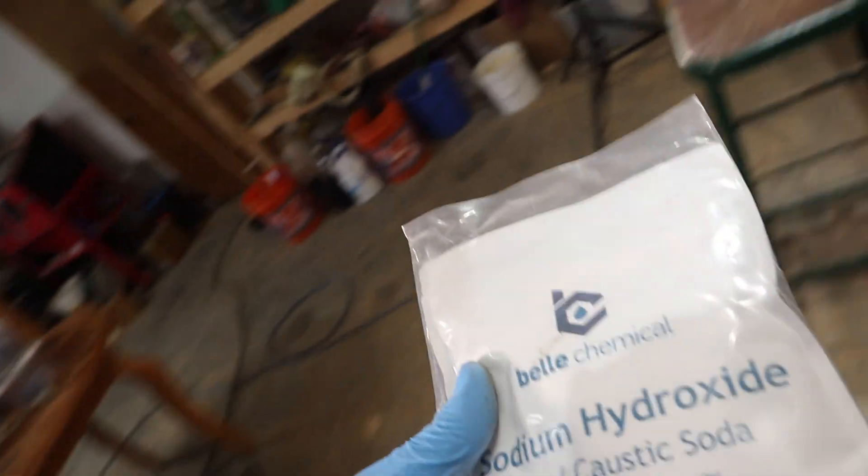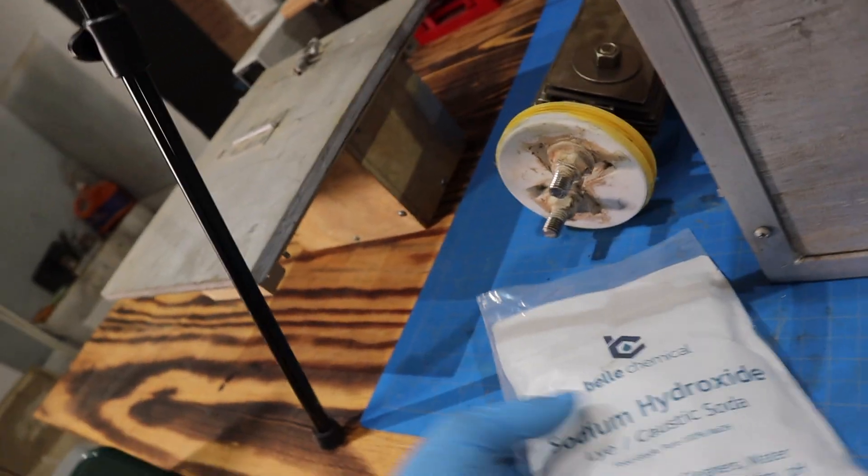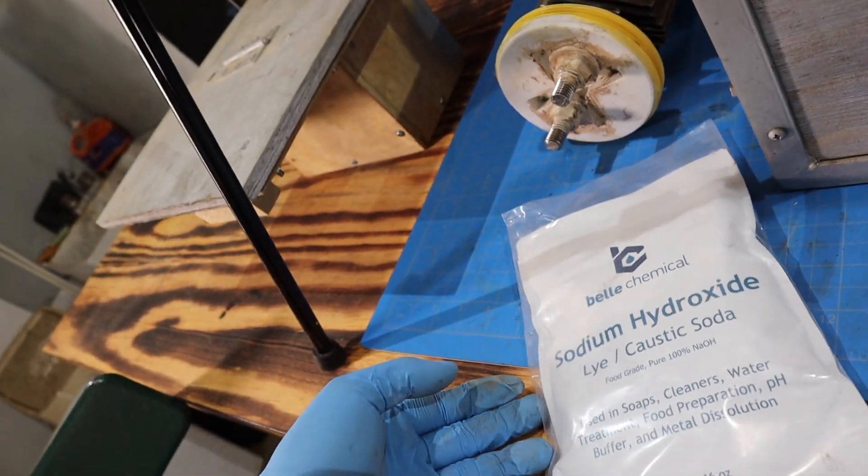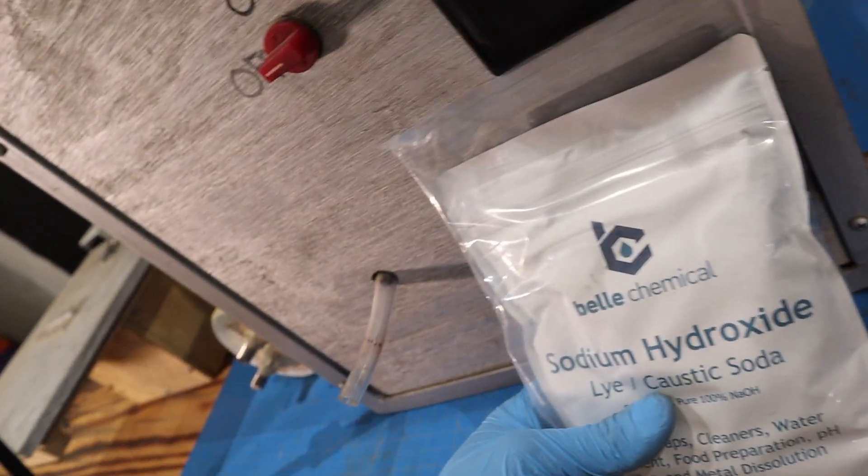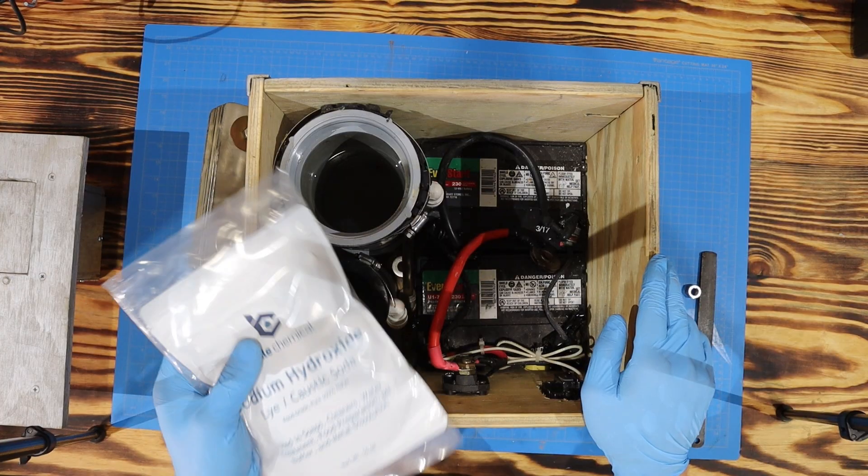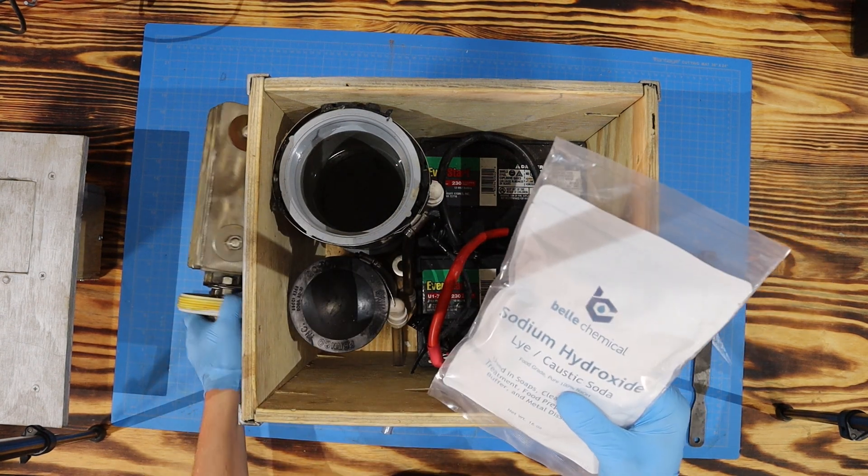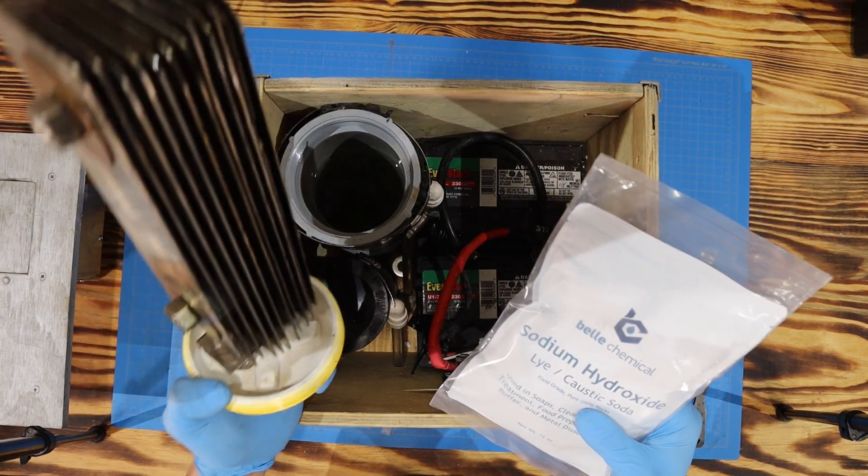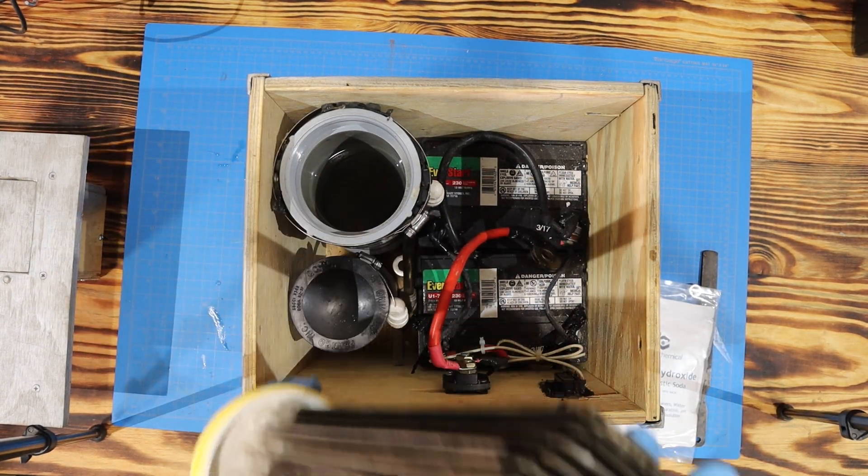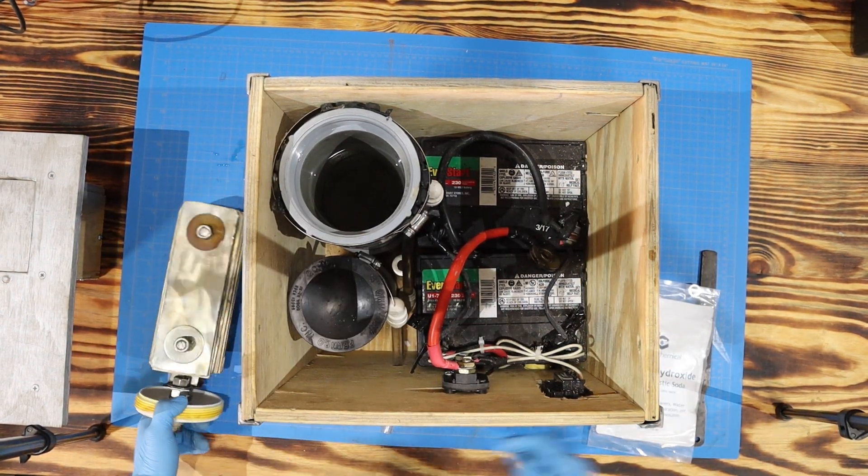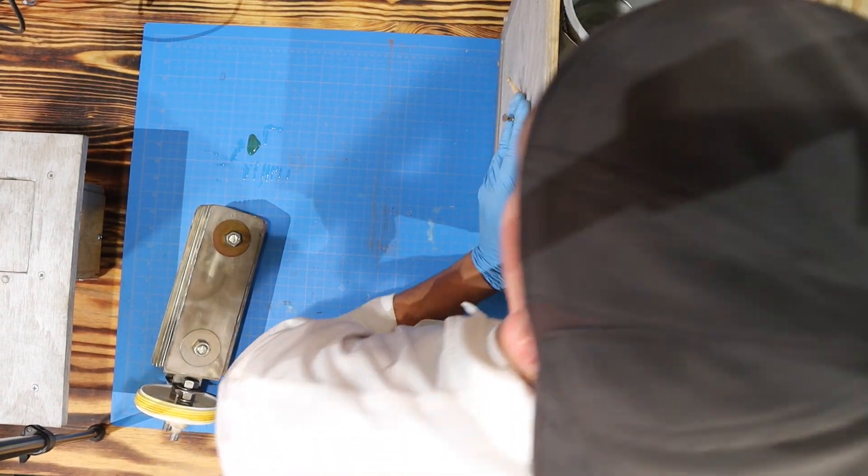Very handy stuff for the hydrogen generators. Other than the fact that it's highly basic and will turn your skin into soap if you get in contact with it and probably burn you some. This is probably the best chemical to use next to potassium hydroxide in these wet cell generators. Actually, before I put this in, I'm going to re-seal this thing. Because I'm going out of order. I need to reseal this.